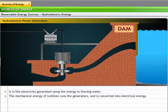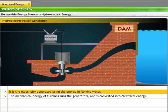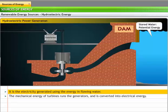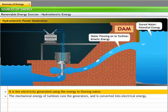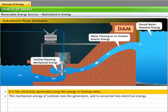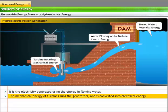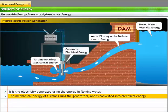Hydroelectric power or hydropower refers to the electricity generated using the energy in flowing water. To generate hydroelectric power, flowing water is stored in a dam. When this water is channeled into the power station, its potential energy is converted into kinetic energy. The flowing water turns the turbines in the power plant, transforming the kinetic energy into mechanical energy. The mechanical energy of turbines runs the generators and is converted into electrical energy.